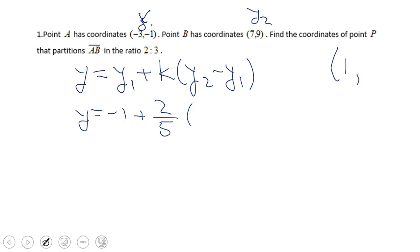Negative 1 plus again the K, if you remember, it was 2 fifths. And y2 will be 9 minus negative 1. So negative 1 plus 2 fifths, 9 minus negative 1 is 10. Again, simplifying here will be better. 5 goes in 10 two times, and we end up with negative 1 plus 4. That will be positive 3.